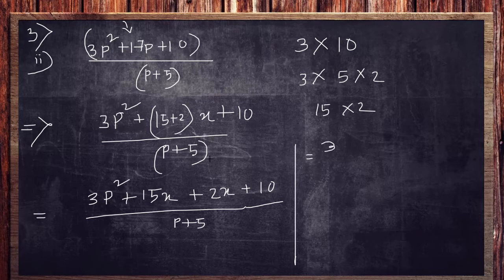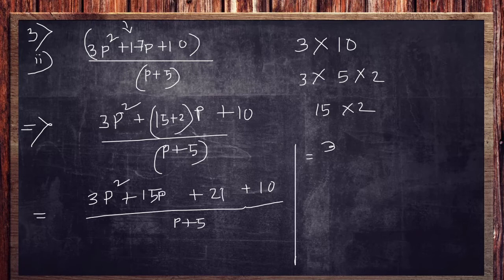So 3, I am sorry, it is p over here but mistakenly I have written x. So let me change it. It is p. It is also p and that is also p. Okay, now it is done.